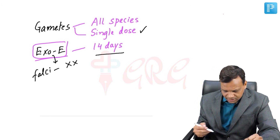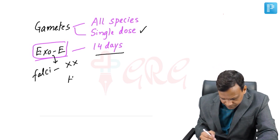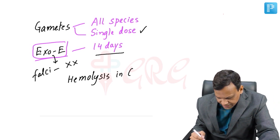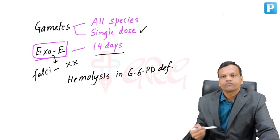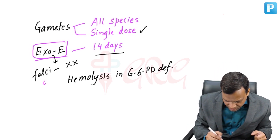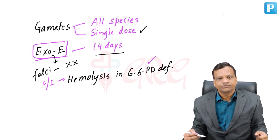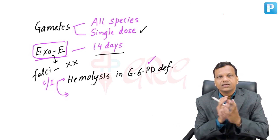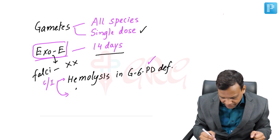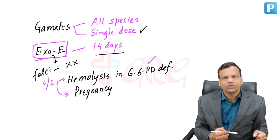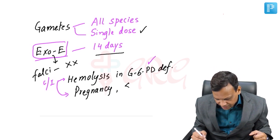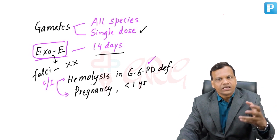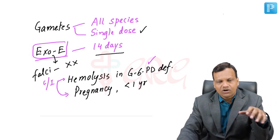Primaquine can cause hemolysis in patients with G6PD deficiency. Therefore, primaquine is contraindicated in G6PD deficiency. Additionally, newborn infants have physiological G6PD deficiency, so primaquine is contraindicated throughout pregnancy and for the first year after birth (infants). In summary, primaquine is contraindicated in G6PD deficiency, pregnancy, and infants — in all cases because it can cause hemolysis.